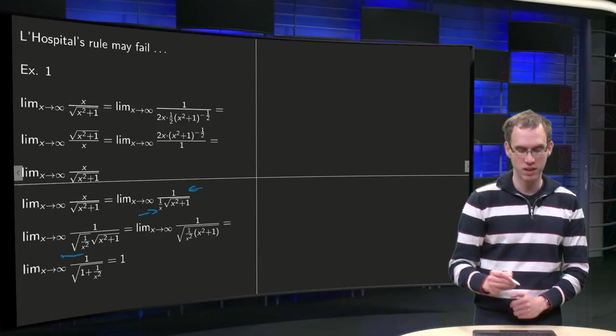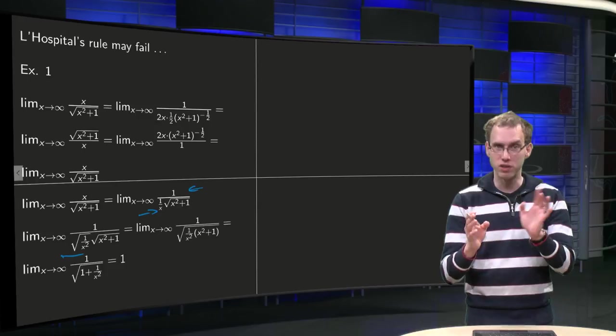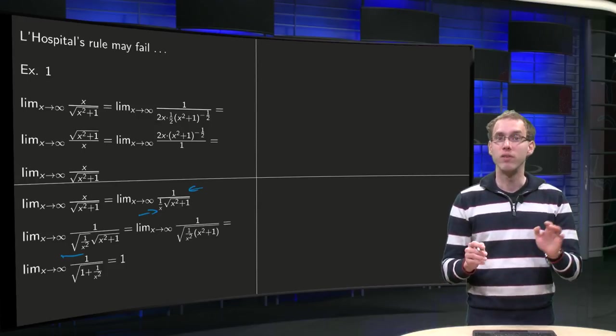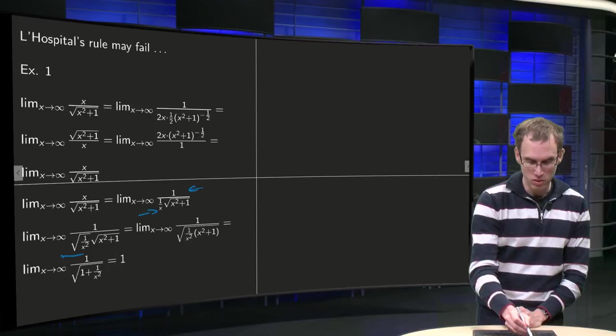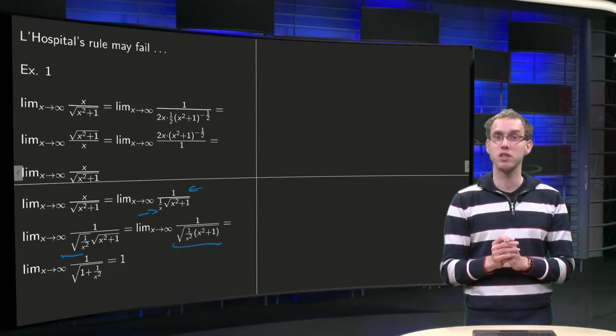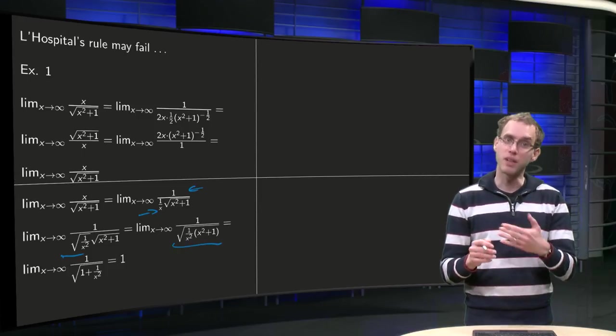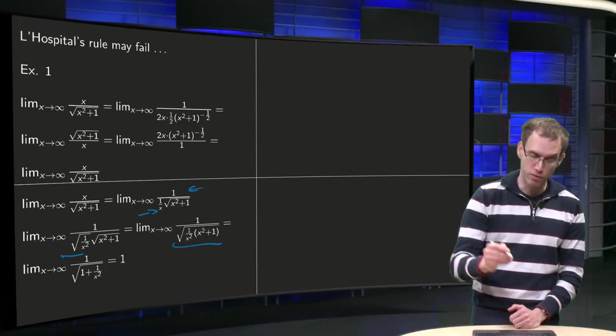So 1 over x equals the square root of 1 over x squared, because x goes to infinity, so everything is positive. We can turn it into one square root: the square root of 1 over x squared times x squared plus 1. Then we can take the x squared further in.